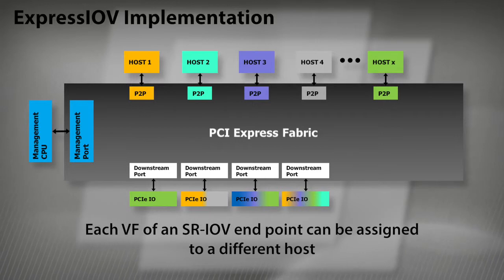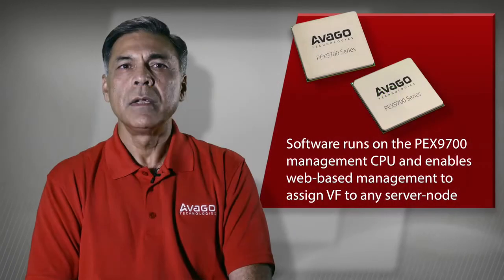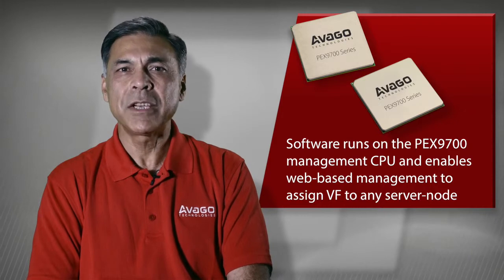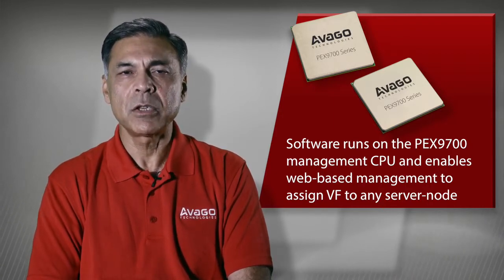SRIOV, or a multi-function physical device, offers many — normally 64 — virtual functions that are typically mapped to virtual machines running on a single physical host node. PEX 9700 devices have a unique feature that allows, under software control, assigning these virtual functions to different physical host nodes. This software runs on the PEX 9700 management CPU and enables web-based management entities to assign virtual functions to any of the server nodes connected to the Express Fabric topology.